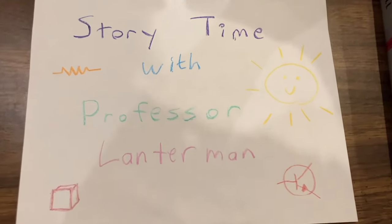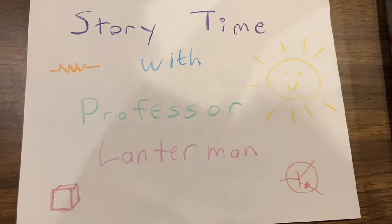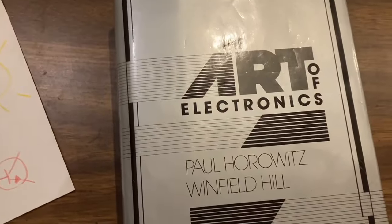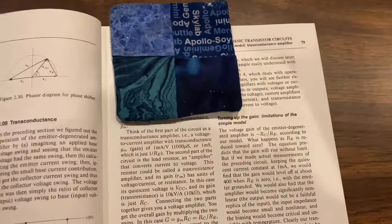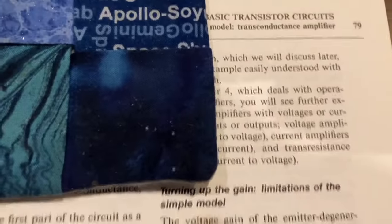Gather around, children. It's story time with Professor Lanterman. Today, I'll be reading from The Art of Electronics by Horowitz and Hill, the best book on electronics ever written. Let's start on page 79.